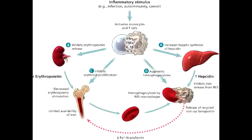One additional thing to note about anemia of chronic disease is that long-standing anemia of chronic disease will convert this non-hemolytic normocytic anemia into microcytic hypochromic anemia. The reason this happens is because long-standing decreased usability of iron will cause this condition to start presenting as iron deficiency anemia.